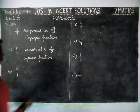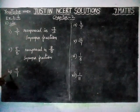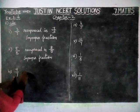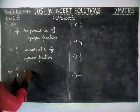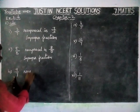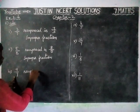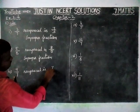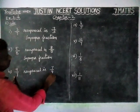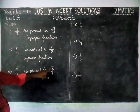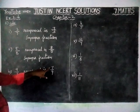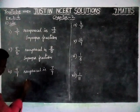Next, third question: 9 by 7. The reciprocal is 7 by 9, and here the numerator is less than the denominator, therefore this is a proper fraction.